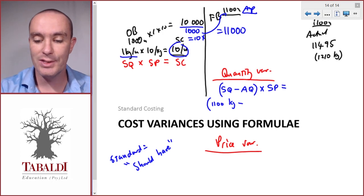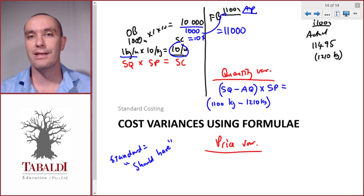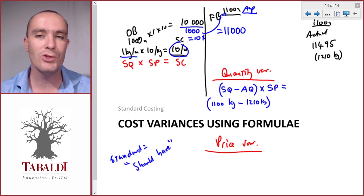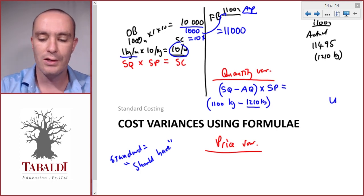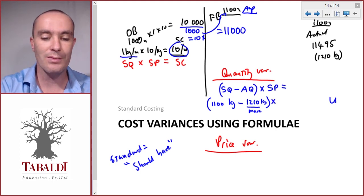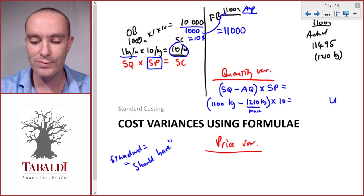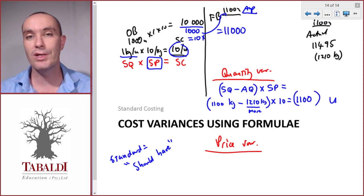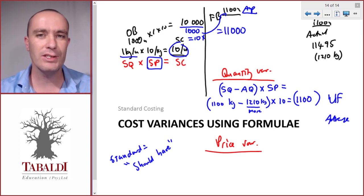Minus the actual quantity used — that was given. The difference in kilograms shows we used too much, so the variance is unfavorable (U). We multiply the kilogram difference of 110 kg by the standard price of $10, giving $1,100 unfavorable.